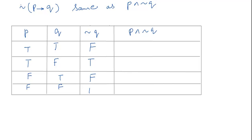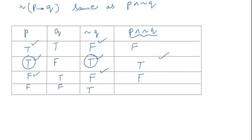Now, p conjunction negation q: true and false gives false; true and true gives true; false and false gives false; false and true gives false. In conjunction, both values must be true to give a true result. If either one is false, the result is false.